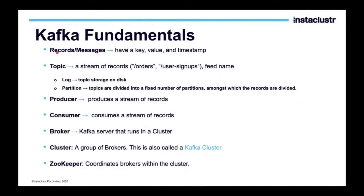Now we are going to see the technical aspects. You have records or messages. Each record or message which a producer produces or a consumer consumes has a key, a value, and a timestamp — these three fields are there by default. The timestamp is when the record was produced. Your data can be distributed, split into key and value pair, because it is easy to manage key-value pairs. You can use a key-value pair or just use a value field, and the key can be automatically generated by Kafka.